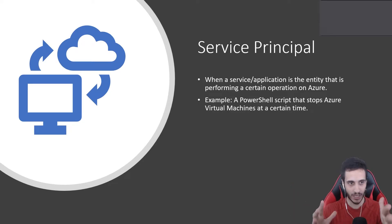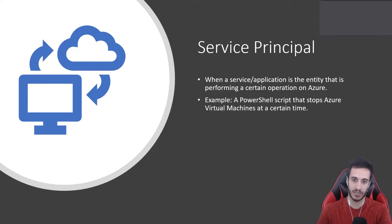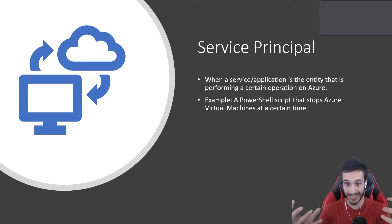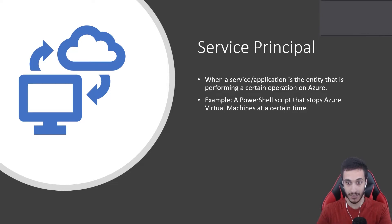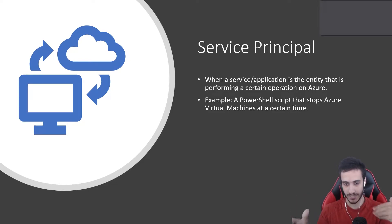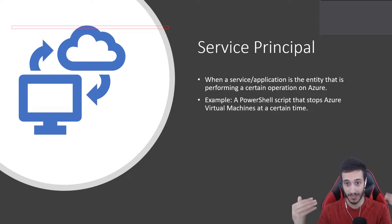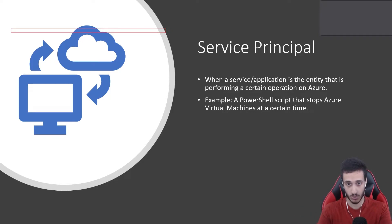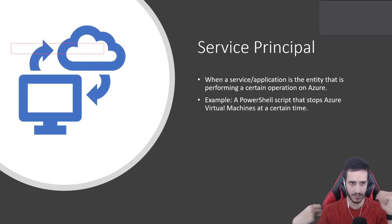Just like a user can perform operations on Azure, we also sometimes need applications to perform those operations. The simplest example is a PowerShell script that stops Azure virtual machines at a certain time. That script also has to prove its identity to Azure Active Directory so that it can get back a token, which it will then use to stop those virtual machines. Sometimes it's easy to visualize with a user, but a bit more tricky with an application.